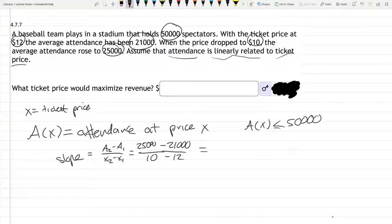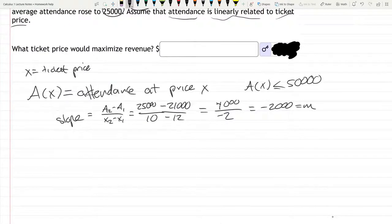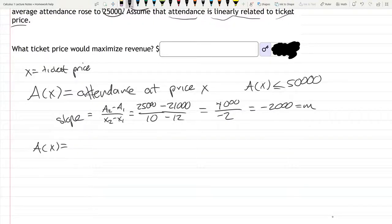We'll subtract these: 25,000 minus 21,000 is 4,000, and 10 minus 12 is negative 2. So 4,000 over negative 2 is negative 2,000. That's our slope, that's our M. So A(X) is a linear function.